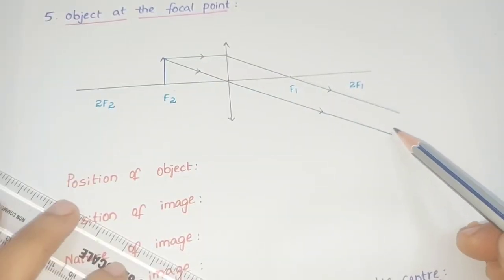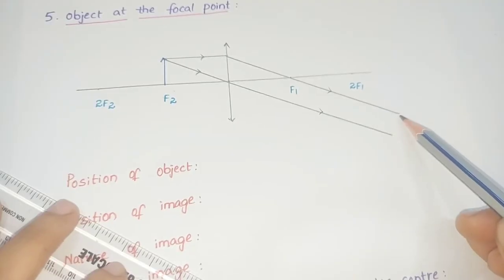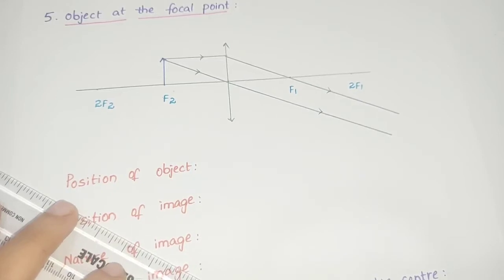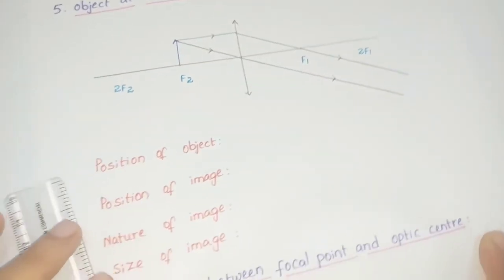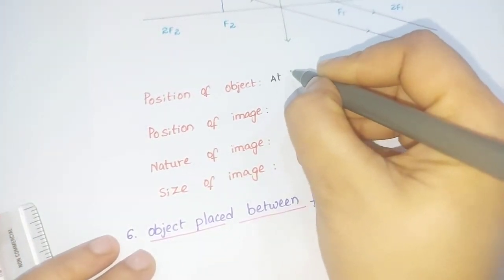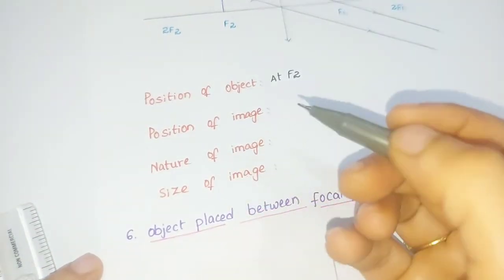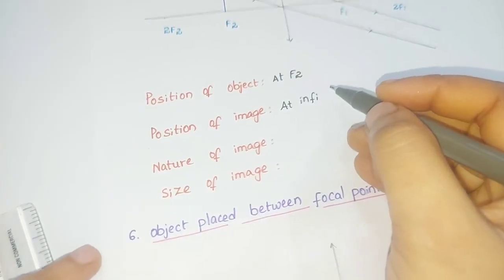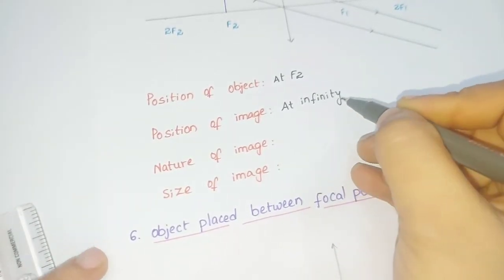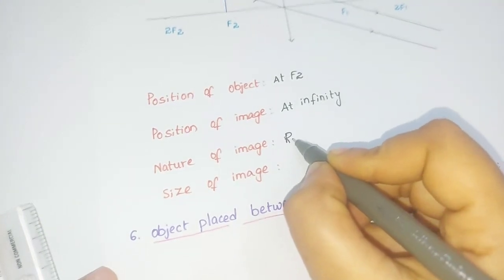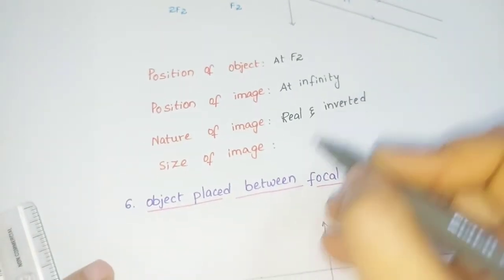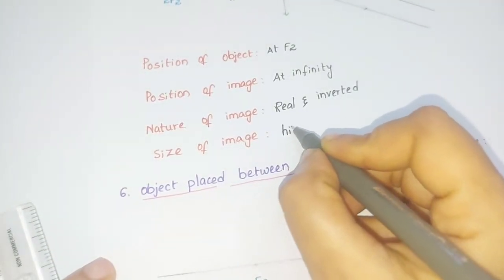If you observe, these two refracted rays are parallel and are supposed to meet at a point at infinity, and that is where the image is formed. Position of object: at focal point F2. Position of image: at infinity. Nature of image: real and inverted. Size of image: a very big image — highly enlarged.